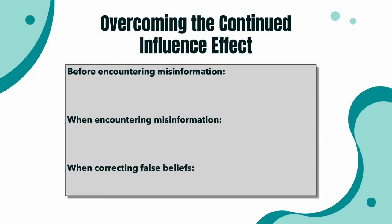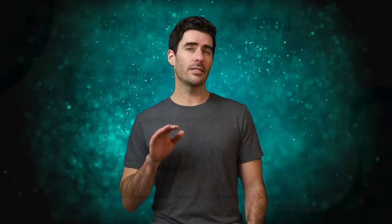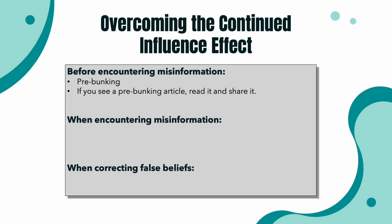So what can science tell us about the best way to overcome the continued influence effect? The answer is different before, during, and after encountering misinformation. There have been a lot of studies into the effect of something called pre-bunking. People are much less likely to believe misinformation if they hear the correct information first — it's kind of like a vaccine that protects your brain against fake news. So when scientists start to see a particular myth go viral, they try to get ahead of it by posting correct information as much as possible. This means that if you ever see an article from a reliable source aiming to discredit misinformation, it's a good idea to read it and share it. Knowing which sources are reliable isn't always easy, so I recommend watching my interview with journalism teacher Jen Stevens, linked above.